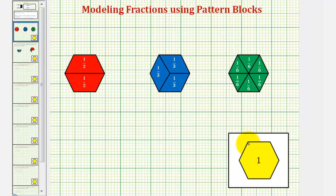If we denominate or cut the whole into three equal partitions as we see here in blue, each blue pattern block would be equal to one third. And finally, if we denominate or cut the whole into six equal partitions as we see here in green, each green pattern block is equal to one sixth.